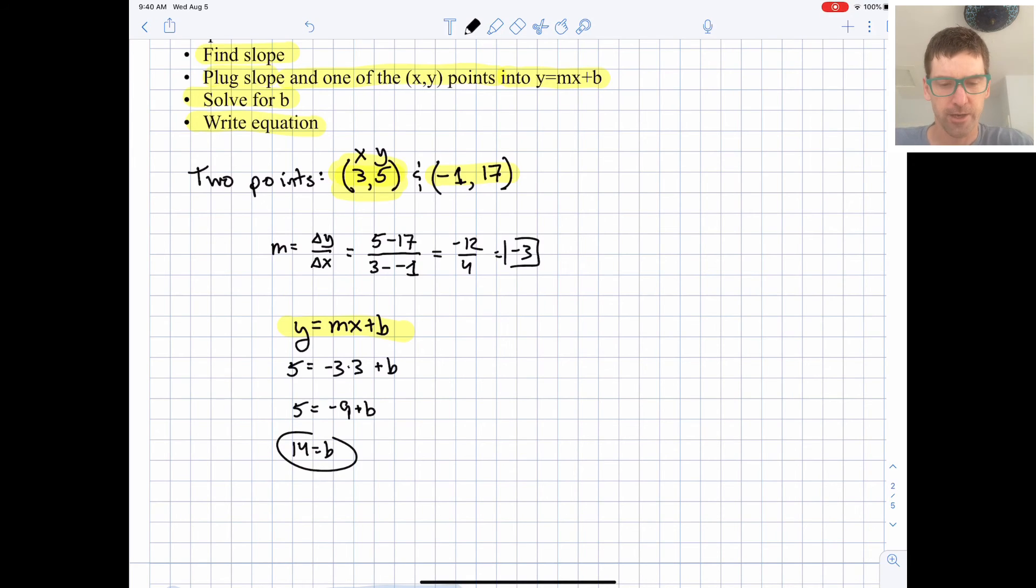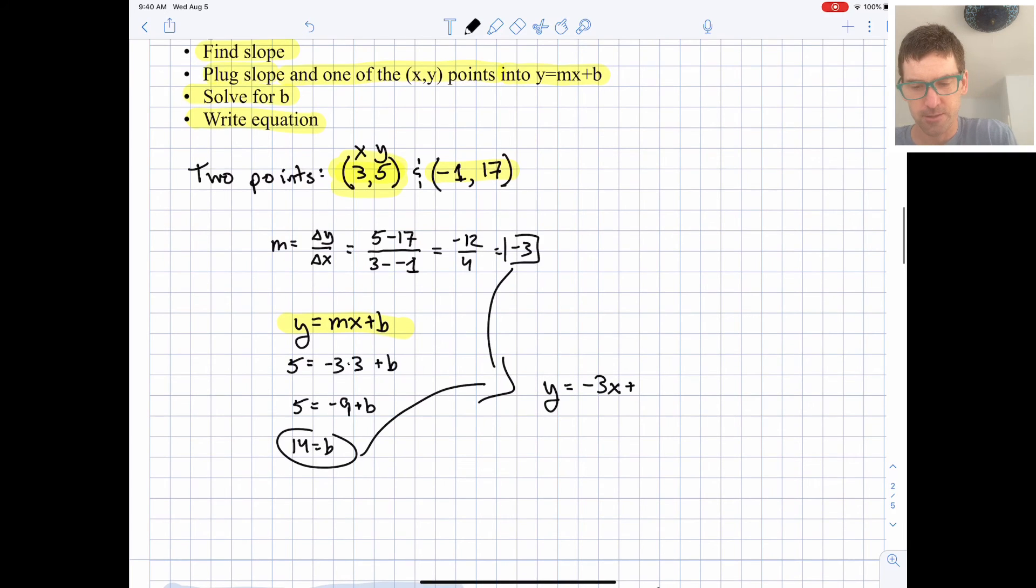So we have our slope, we have our y intercept, and we can write out our final equation. We can plug this information into y equals negative 3x plus 14.